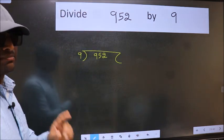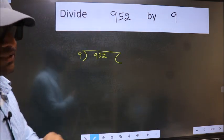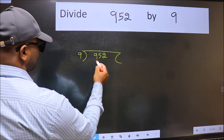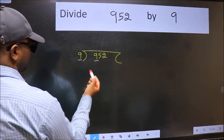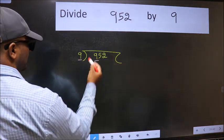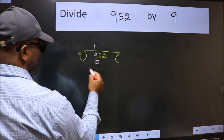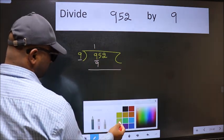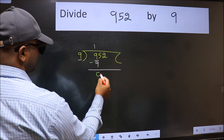This is your step 1. Next, here we have 9 and here 9. When do we get 9 in the 9 table? 9 ones is 9. Now we should subtract. We get 0.